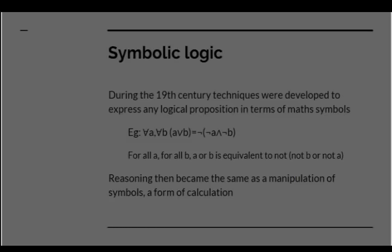Following on from Boolean, later 19th century mathematicians developed techniques whereby you could express any logical proposition in terms of mathematical symbols. They invented a new set of mathematical symbols for this process. So the rather odd-looking formula here says that for all A, for all B, A or B is equivalent to not B or not A. And that is a rule developed by the logician de Morgan. Reasoning then became the same as a manipulation of symbols. It became a form of calculus, something that the mathematician Leibniz had hoped to achieve in an earlier period.